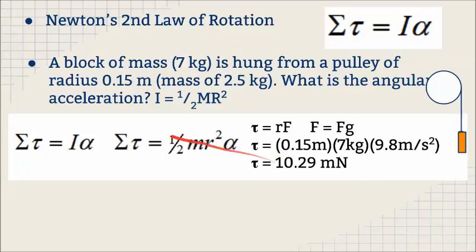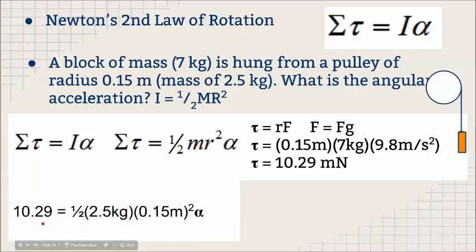So now we have the torque and all the other values except for alpha, so we can plug that in. The 10.29 equals one half of 2.5. Now we're only using the 2.5 there because that is the mass of the object that's rotating. That's what this side is all about. The torque comes from the mass that's hanging, and the object that's rotating is what we calculate with the rotational inertia.